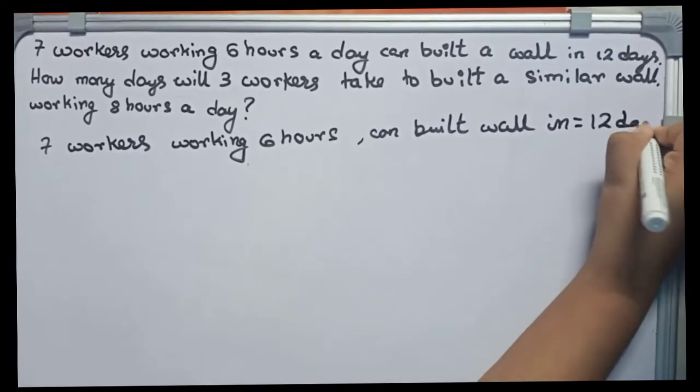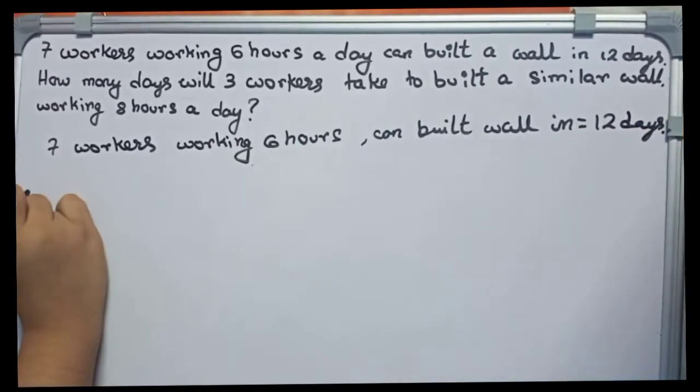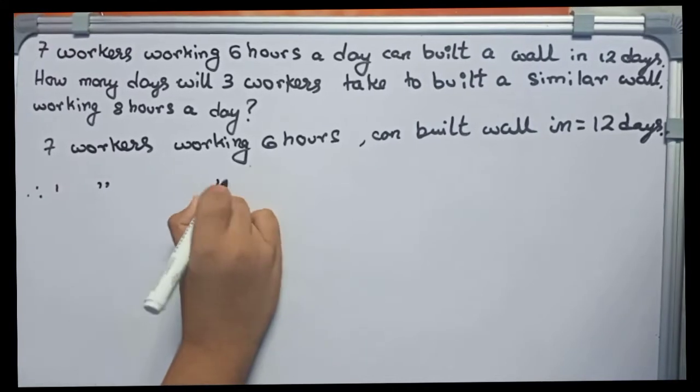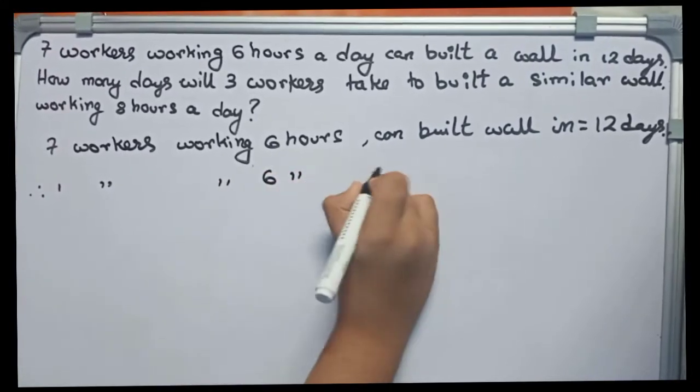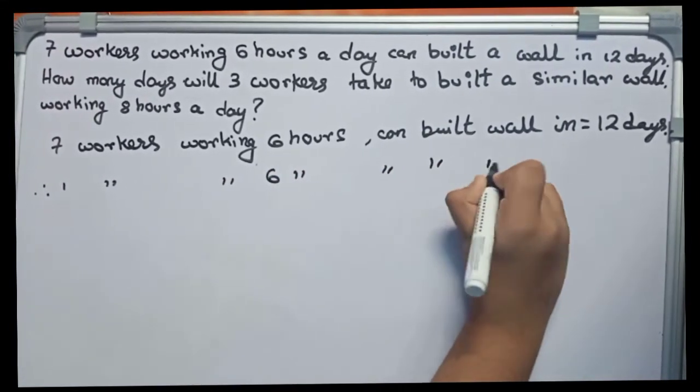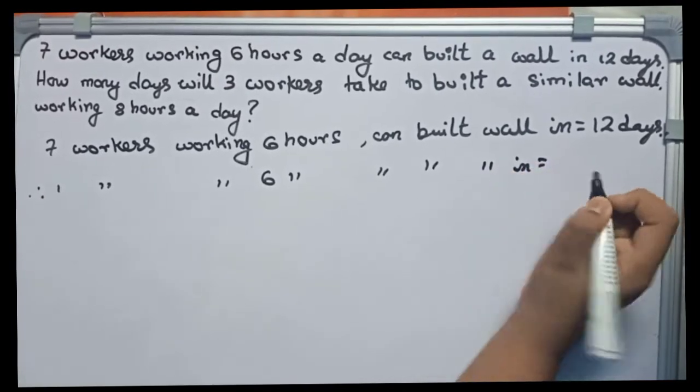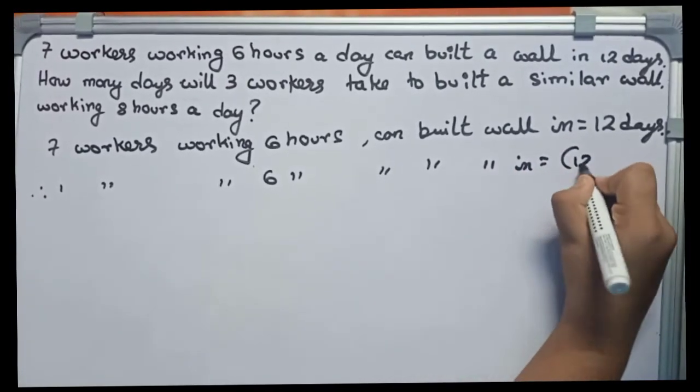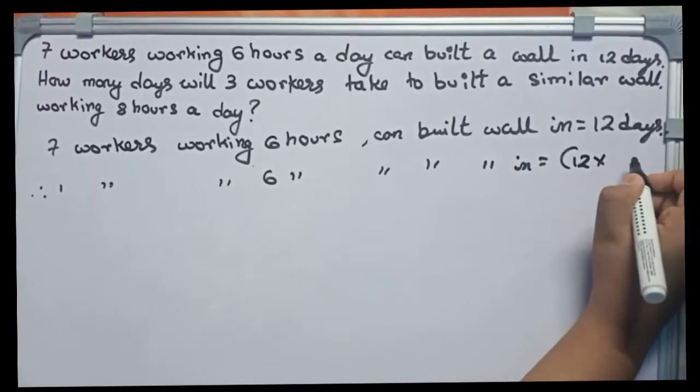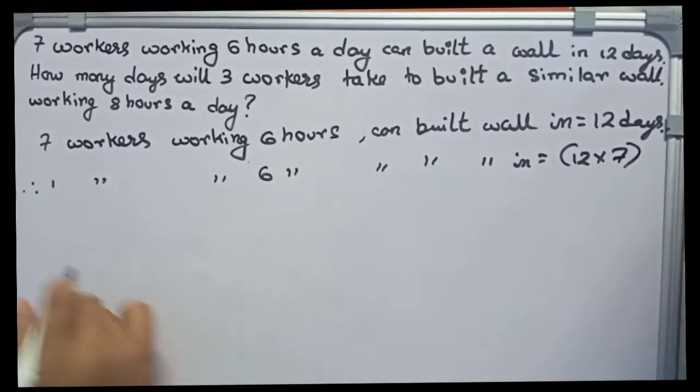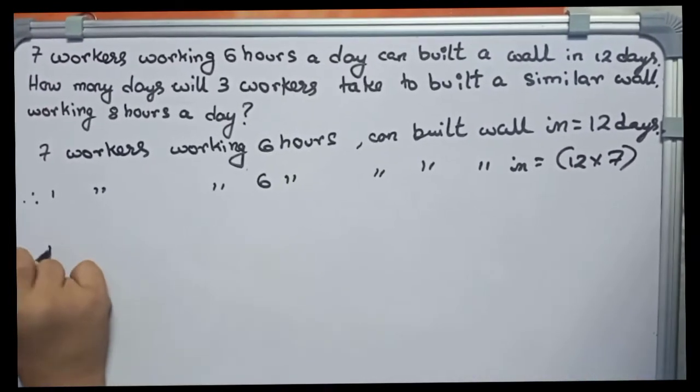So now I find, therefore, one worker working six hours a day can build the wall in - definitely it will take more days - to become 12 into 7, so 12 into 7 days.